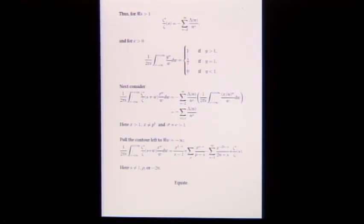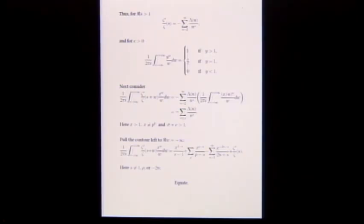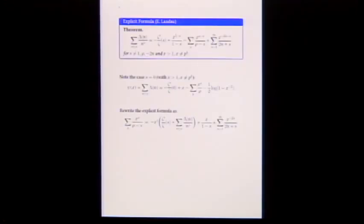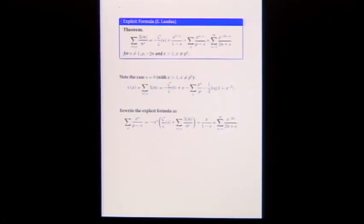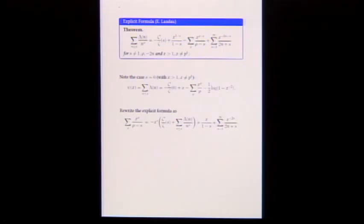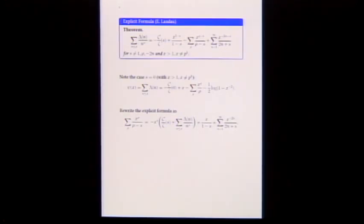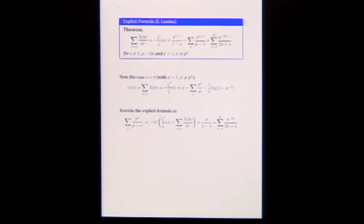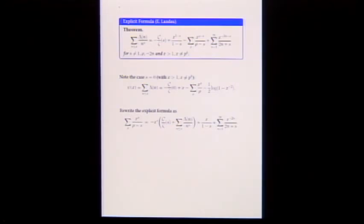We have to avoid s being a pole or zero of zeta in this formula. So by simple complex analysis, the integral has two expressions: a truncated Dirichlet series on one side and the residue contributions on the other. Equating them gives an explicit formula, first proved by Landau in this form. The truncated Dirichlet series equals minus zeta prime over zeta of s, plus a term from the pole at 1, non-trivial zeros, and trivial zeros.